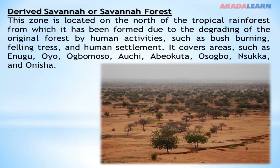Derived savannah or savannah forest: this zone is located to the north of the tropical rainforest, from which it has been formed due to the degrading of the original forest by human activities such as bush burning, felling trees and human settlement. It covers areas such as Enugu, Oyo, Ibadan, Auchi, Abeokuta, Osogbo, Nsukka and Awonicha.